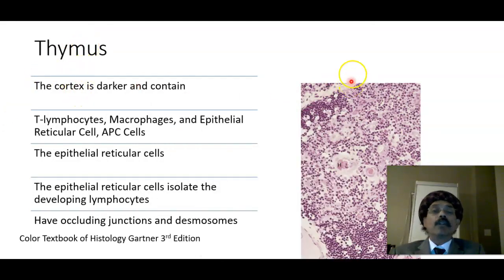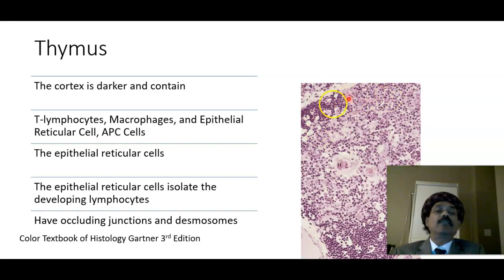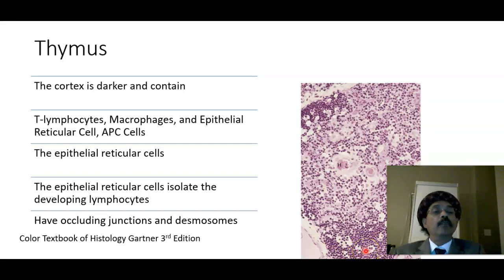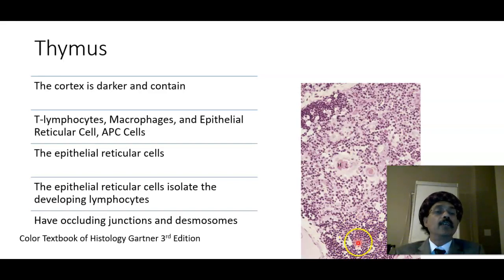The thymic cortex is darker and contains multiple T lymphocytes, macrophages, epithelial reticular cells, and antigen-presenting cells. The T lymphocytes in the cortical region are in the process of becoming immunocompetent — they are exposed to the major histocompatibility complex and learn to distinguish self from non-self, eventually becoming immunocompetent T cells.